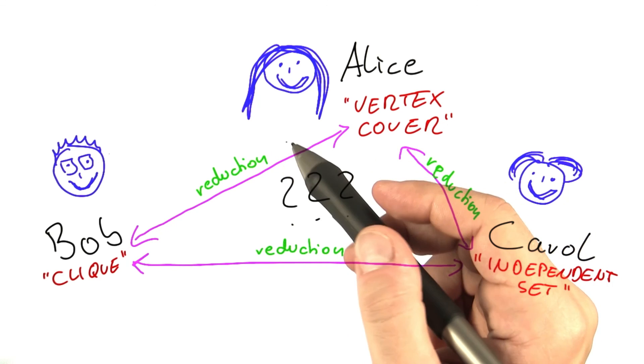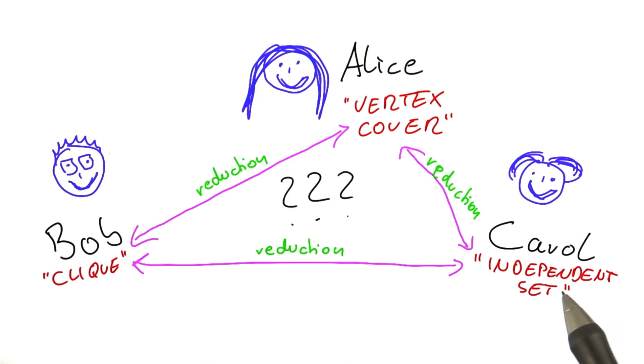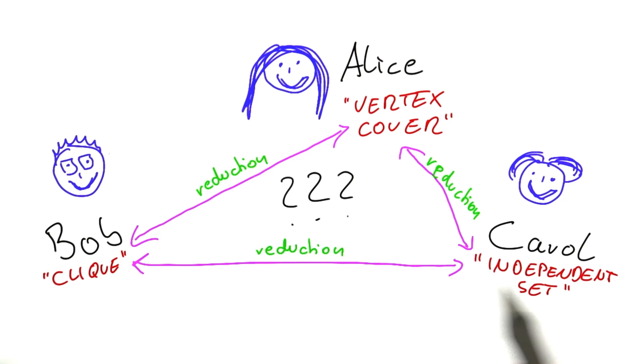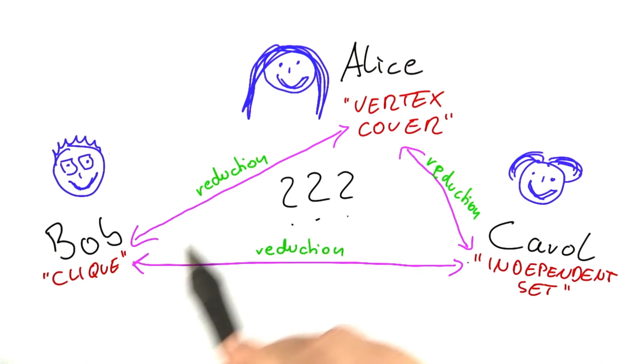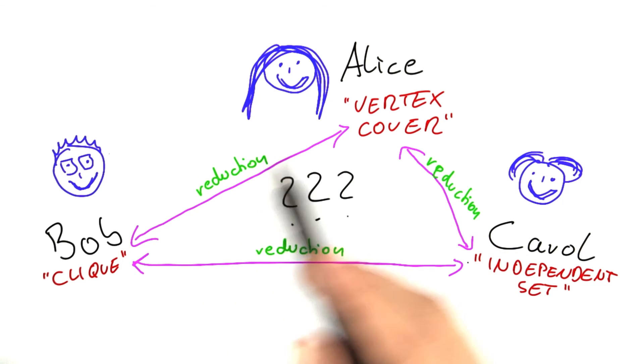You can find out how that story continues in our next unit of our introduction to theoretical computer science. Plus, in the next unit I'll also tell you how you could quickly win a million dollars.